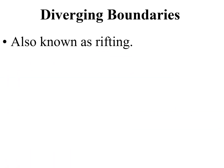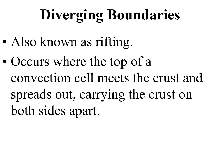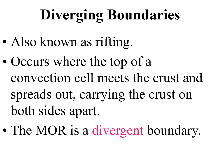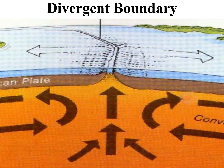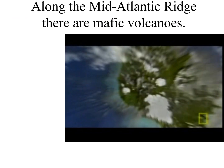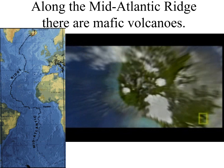Diverging boundaries, also known as rifting boundaries, occur where the top of a convection cell meets the crust and spreads out, carrying the crust on both sides apart. The mid-ocean ridge (MOR) is a divergent boundary — the Mid-Atlantic Ridge is an MOR. Iceland sits right along the mid-Atlantic ridge, which cuts right through it, creating volcanoes. As the plates pull apart, Iceland gets bigger.